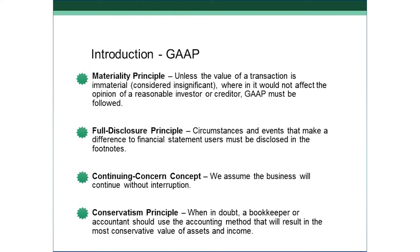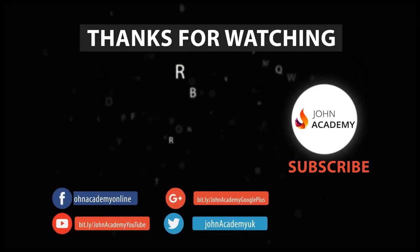The last principle is the conservatism principle. When in doubt, a bookkeeper or accountant should take the most conservative approach in recording a transaction — the most conservative value of assets and how we influence income. I never want to potentially overstate my income, because that will influence someone's opinion of my company and they'll make decisions based on it — which could have a very negative result. If I understate income, that's not good either. What I want is to state things properly: not understated, not overstated, but erring on the side of conservatism.